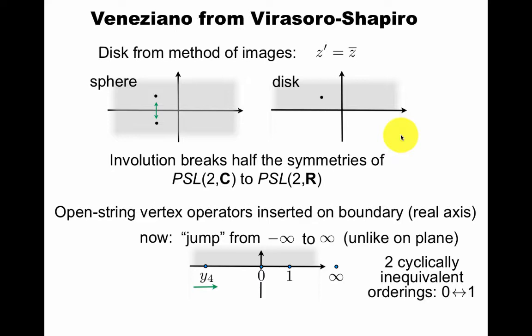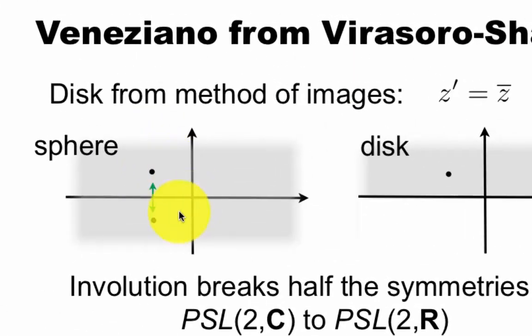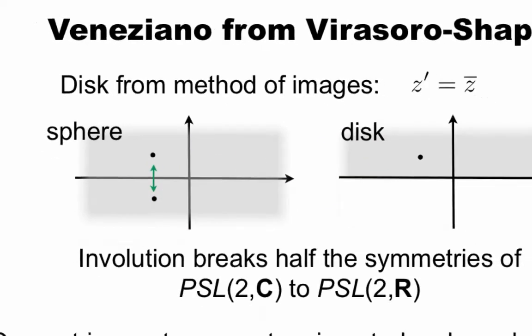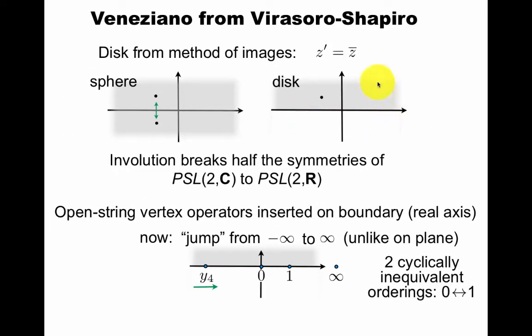Now, Veneziano amplitude means open-string tachyons, so we get the disk from the method of images, as mentioned before. If you take a point z and you go to point z' on the sphere, which is just z-bar, and you identify, you get the disk with the boundary being the real line. So this is conformally equivalent to an actual disk that is round and has a boundary. This involution is mapped from here to here, breaks half the symmetries of PSL(2,C). So we have three real parameters. Again, choose 0, 1, and infinity, but not on the real line.